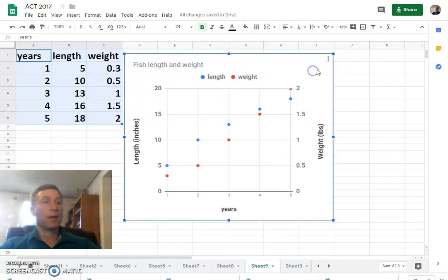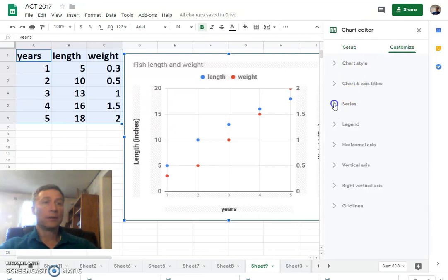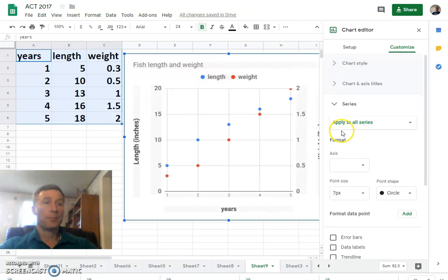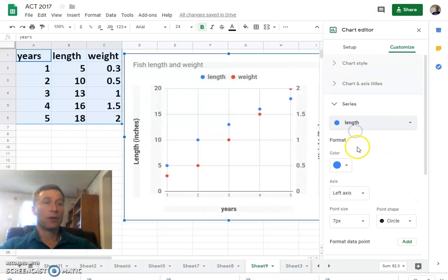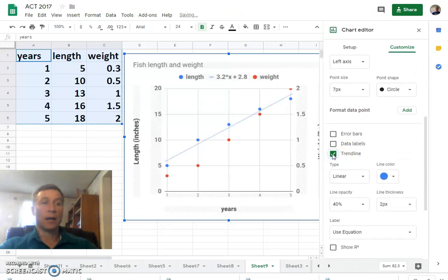And then we're going to edit this graph, edit this chart, and customize series. Let's just do the length first. Add a trend line.